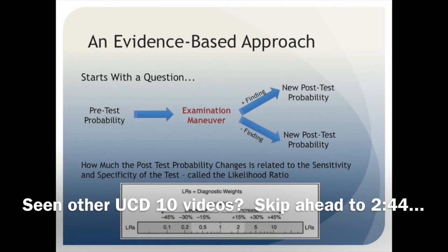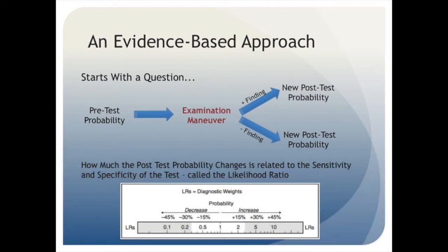An evidence-based approach to the physical exam begins with a diagnostic question. For example, does this person have chronic anemia? To answer the question, you first estimate a pre-test probability, which is essentially your best guess as to how likely you think this patient is to have the pathology in question based on aspects of their history, presenting symptoms, etc. It's generally expressed as a percentage.